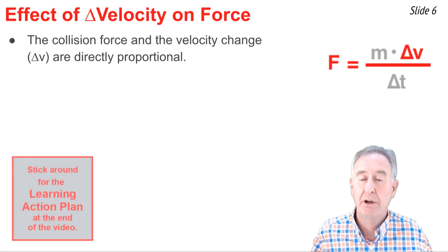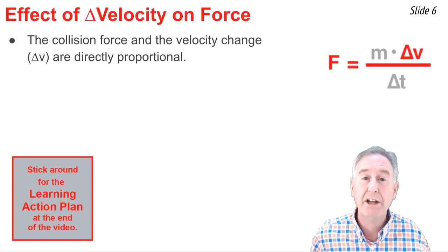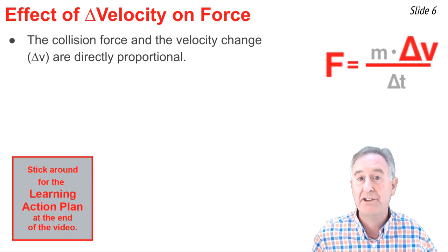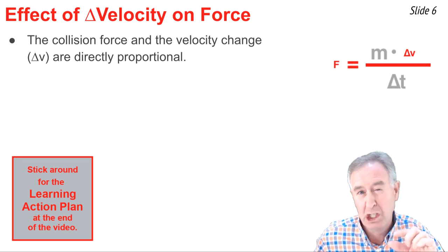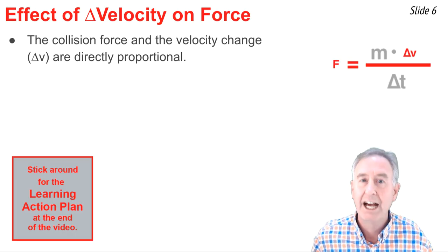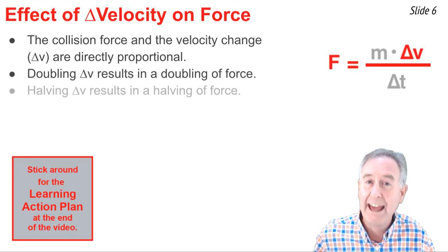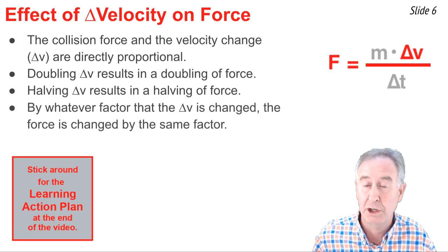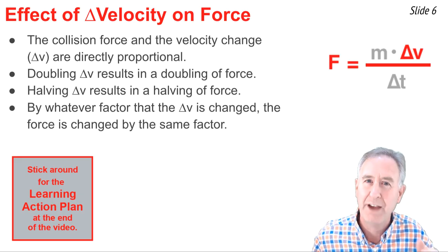Now let's consider the variable velocity change. The equation shows that force is directly proportional to the velocity change. If you make the velocity change larger, you make the force larger; if you make it smaller, you make the force smaller. A doubling of the velocity change would double the force, and a halving of the velocity change would half the force. By whatever factor you alter the velocity change, you alter the force by the same factor.